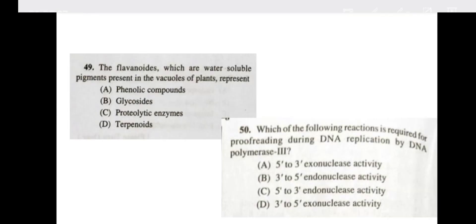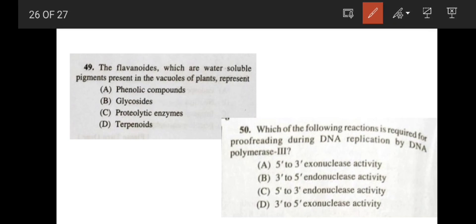Next, coming to the question number 49, our penultimate question, very easy one. The flavonoids, which are water-soluble pigments present in the vacuoles of plants, represent phenolic compounds, option A. Now, our last question, which one of the following reaction is required for proofreading during DNA replication by DNA polymerase 3? The 3' to 5' exonuclease activity is the proofreading activity of DNA polymerase 3. So correct answer is option D.